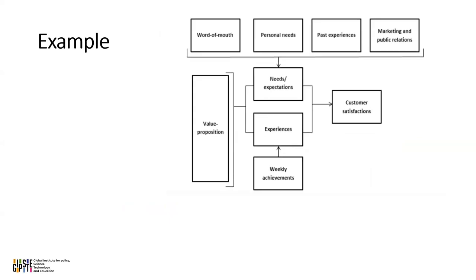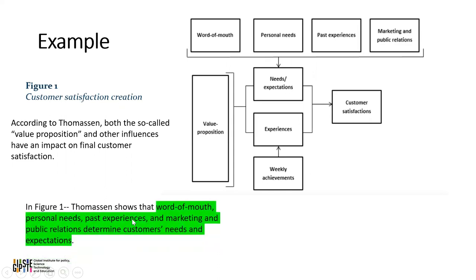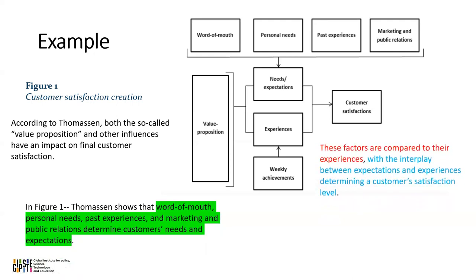Thomason's theoretical framework of customer satisfaction is seen in Figure 1 — customer satisfaction creation. According to Thomason, both the so-called value proposition and other influences — the worth of personal needs, past experience, and marketing and public relations — determine customer needs and expectations, and they all influence final customer satisfaction. These factors are compared to the experiences, where the interplay between expectations and experiences determines the customer satisfaction level.